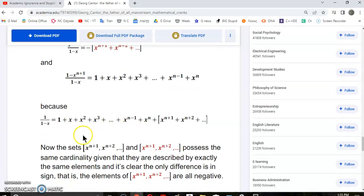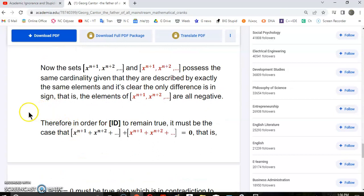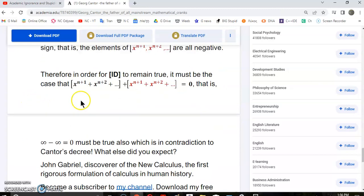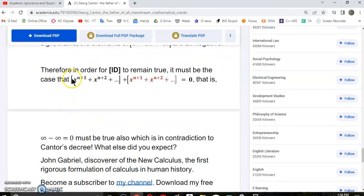So the sets given by x^(n+1), x^(n+2), and the red set possess exactly the same cardinality because they're described by exactly the same elements. It's clear the only difference is inside - that is, the red elements are negative. Therefore, in order for this identity to remain true, which by the way it is, it must be the case that this sum here is zero. That is, infinity minus infinity must be zero, which is in contradiction to Cantor's decree. What else did you expect from a man who went insane and was institutionalized?